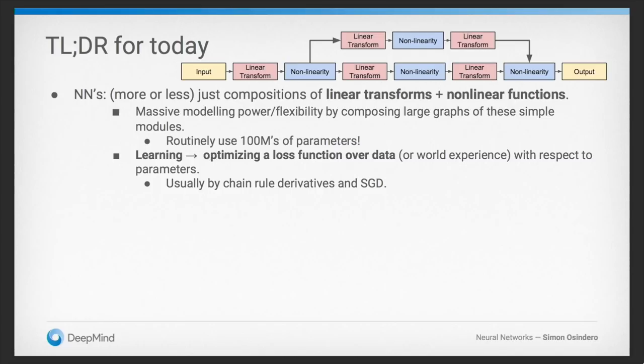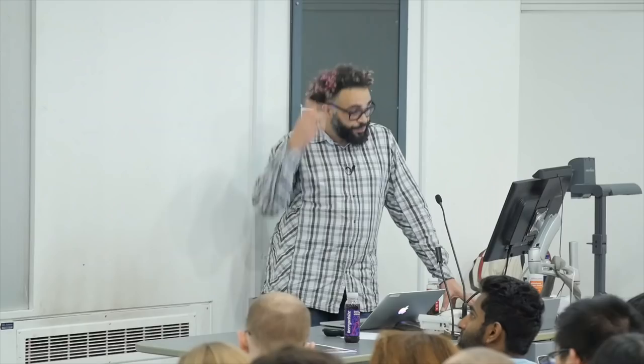Deep learning in neural networks is actually pretty simple. It's more or less just the composition of linear transforms and nonlinear functions. By composing these simple building blocks into large graphs, we gain massive, powerful, flexible modeling power. These days we routinely train neural networks with hundreds of millions of parameters. Learning basically means optimizing a loss function that describes the problem we're interested in over some dataset — or in reinforcement learning, with respect to world experience. We do that using various gradient optimization methods, one of the most common being SGD, or Stochastic Gradient Descent.